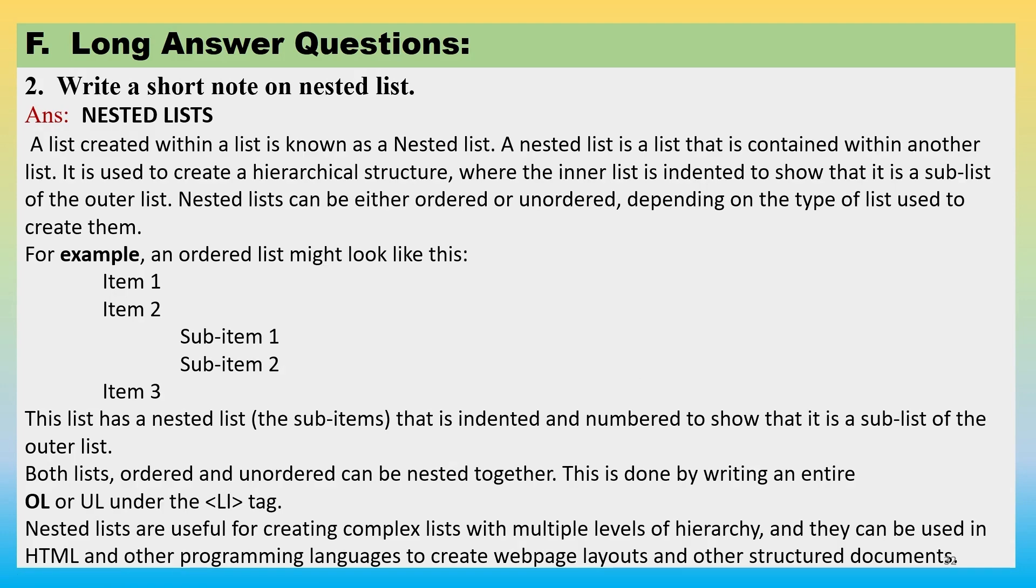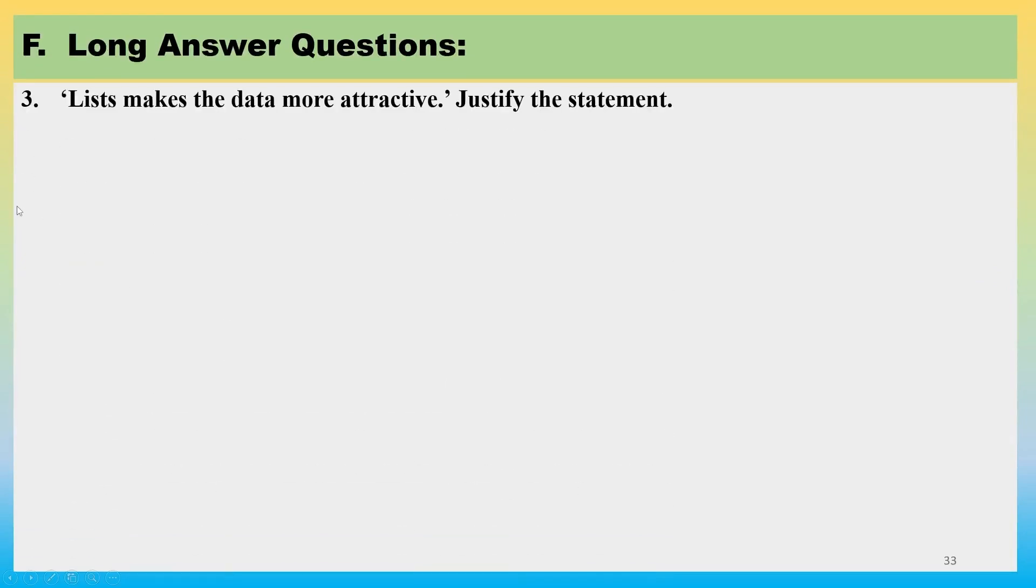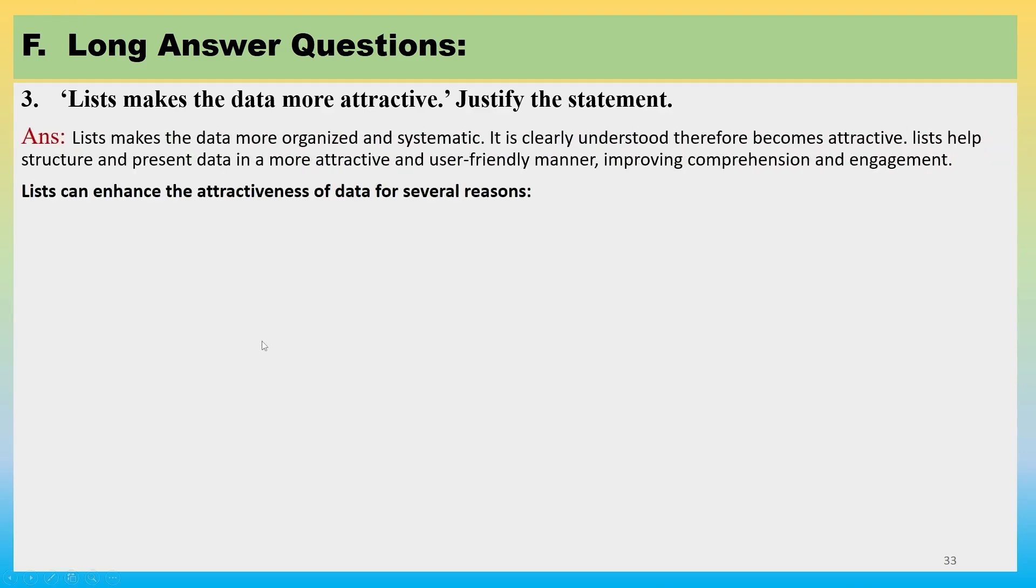Now there was another question number 3: lists make the data more attractive, justify your statement. First of all, just think in your mind, do you agree that lists make data more attractive? Yes, yes, we write our items in a listed format to make it more appealing and attractive and easily readable. So this is true. So what can we write here? Lists make data more organized and systematic because we also put some numbering, so we can count our data.